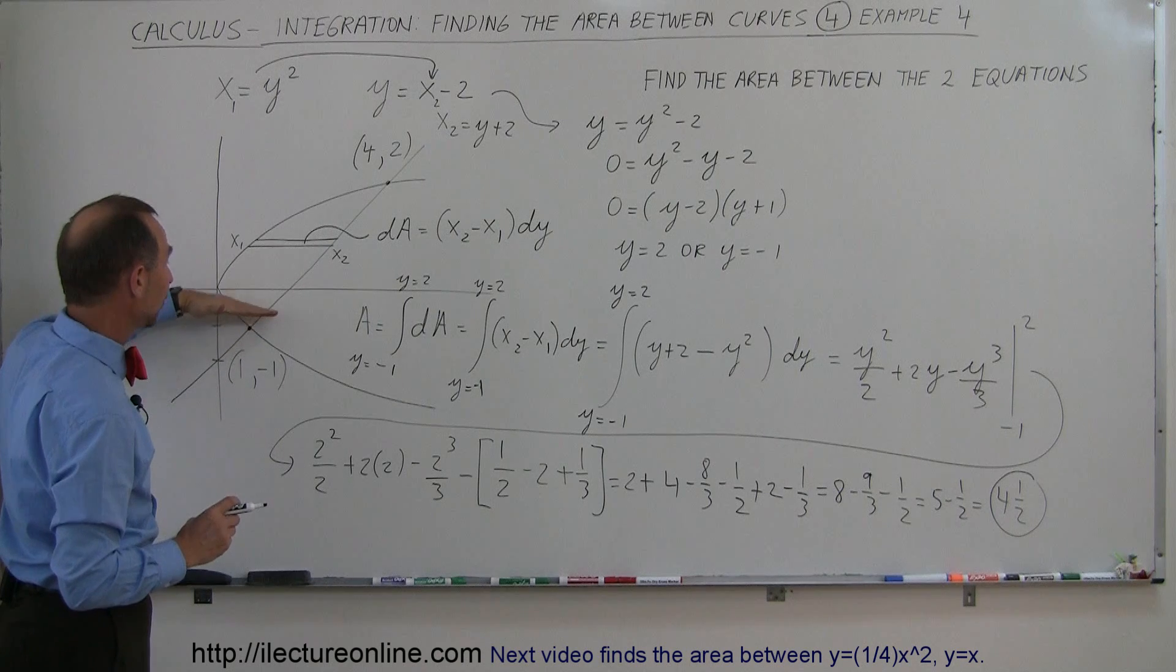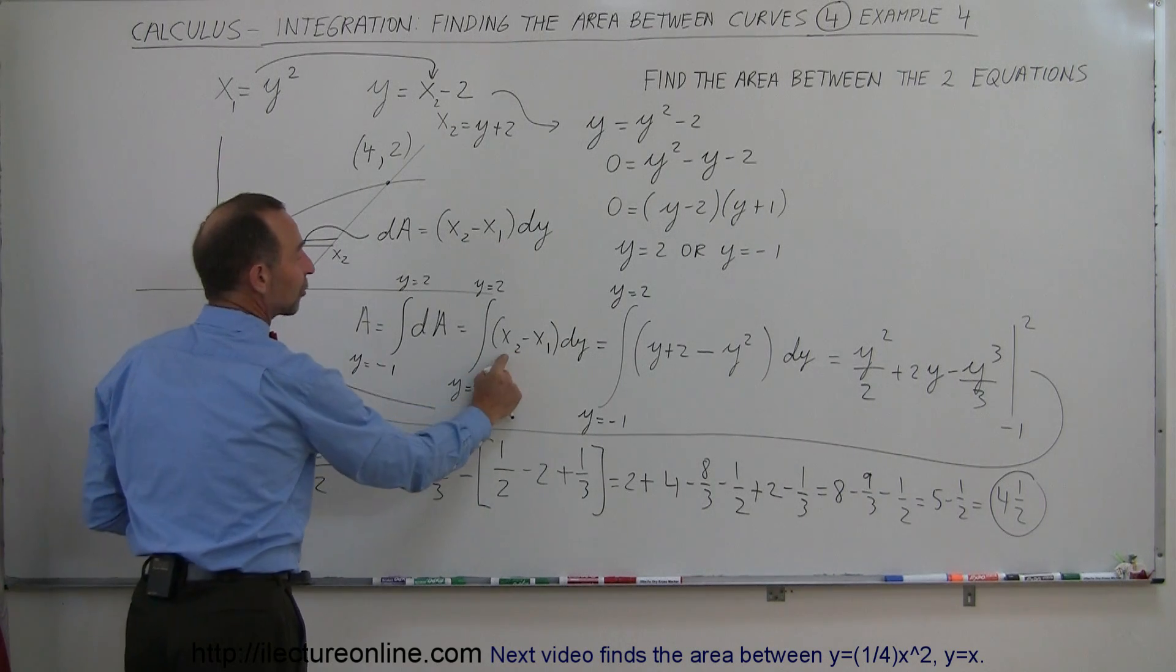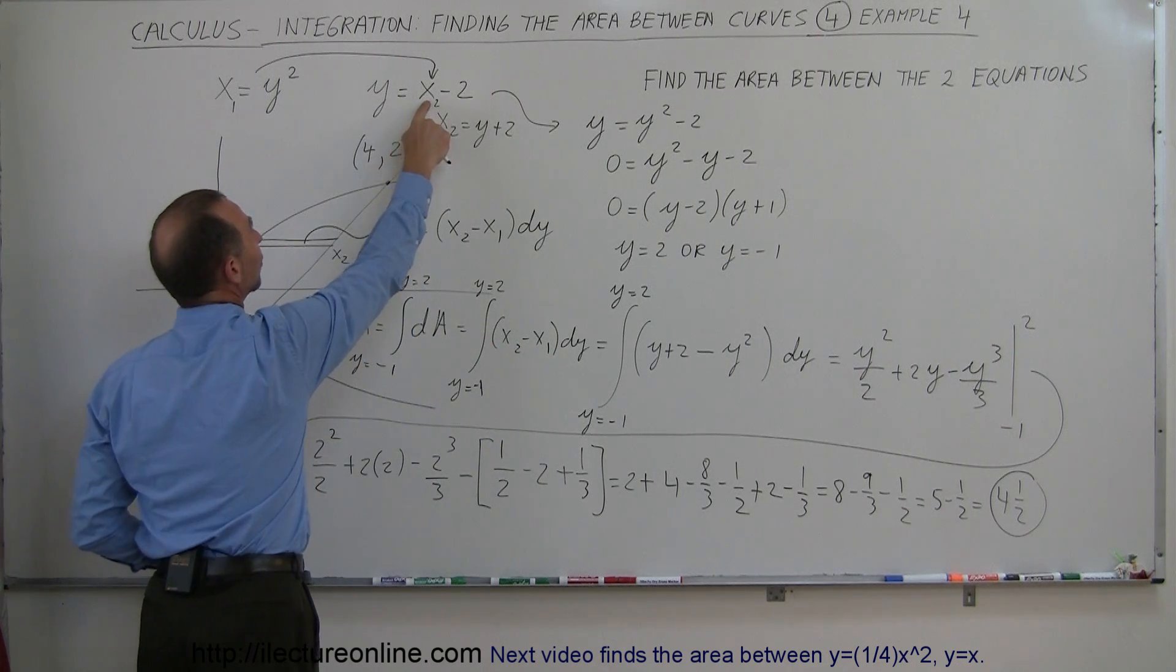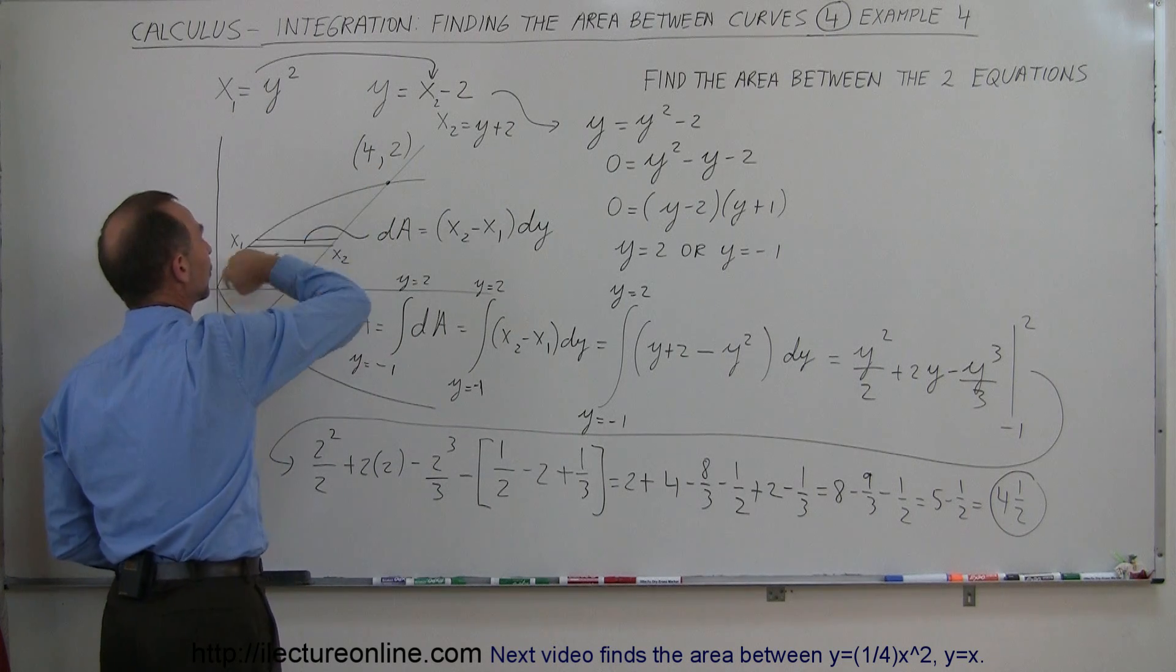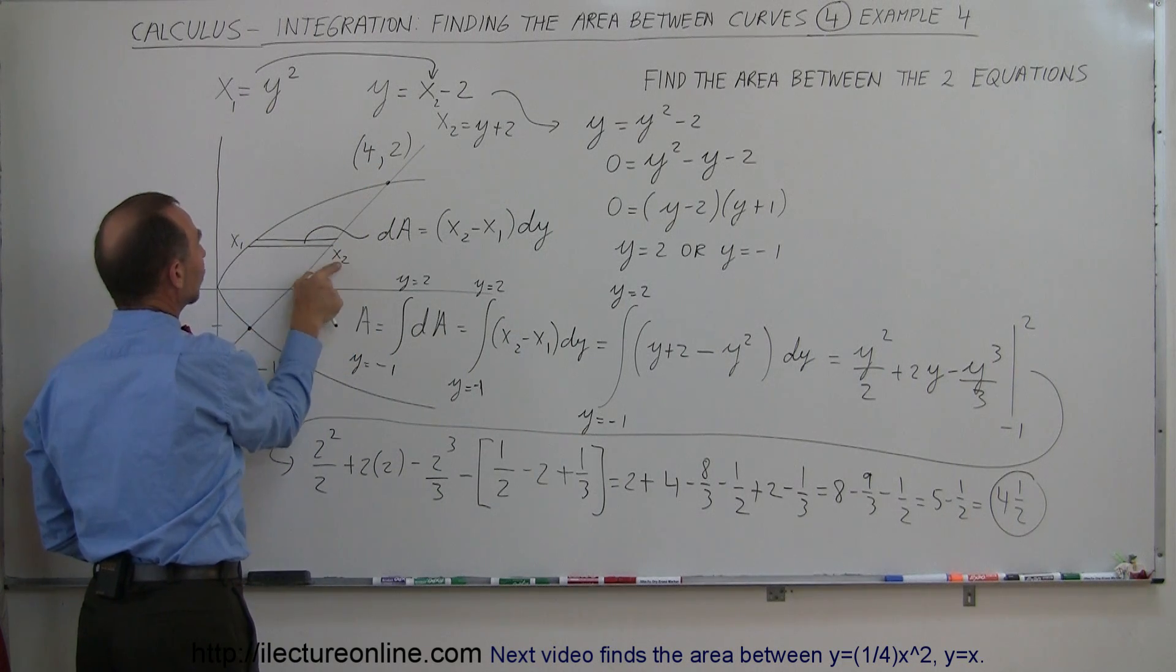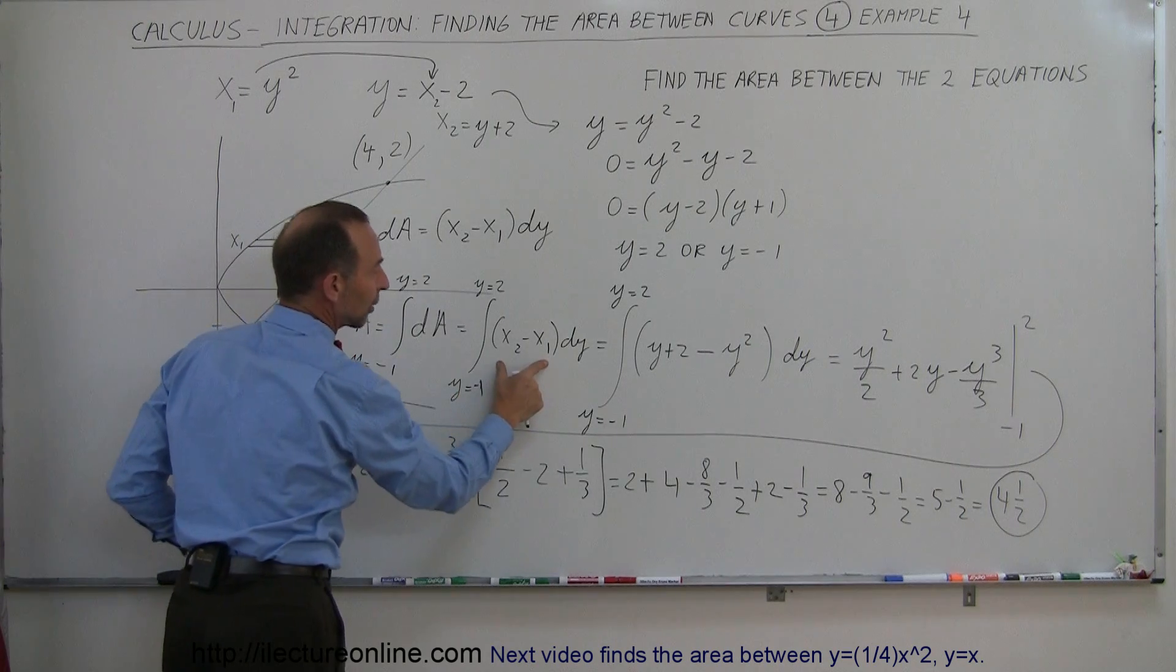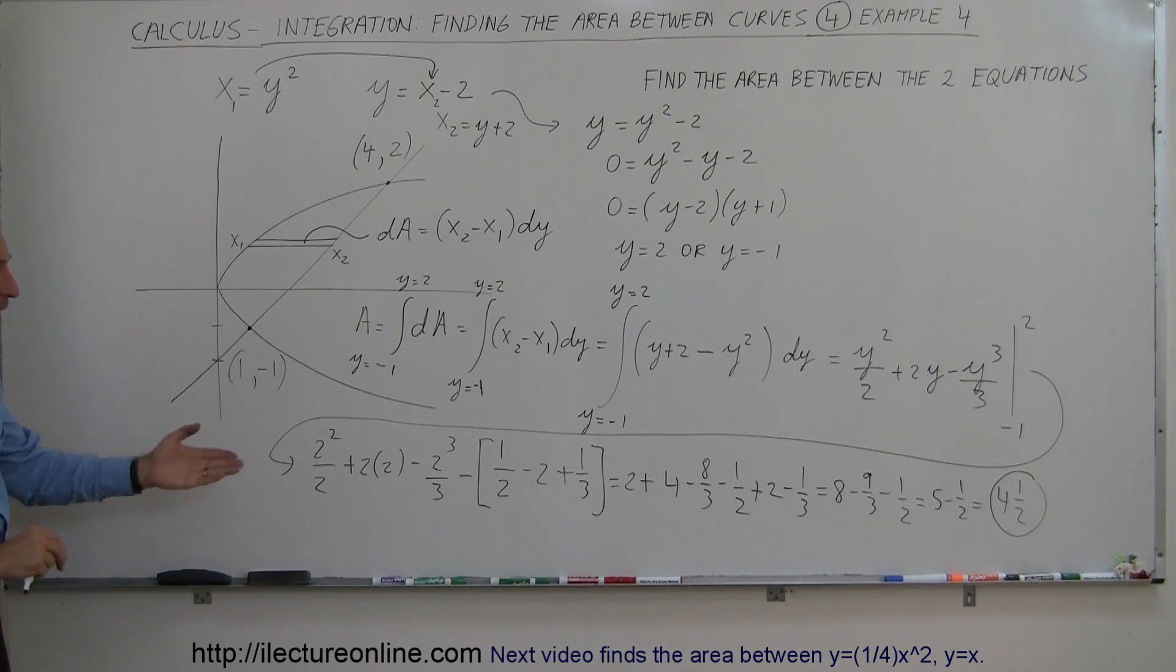And again, the best way to do it is to set up your area element sideways, so that the length of it is x2 minus x1. Define x2 as being part of this equation right there. x1 is the x of this equation right there, of the curve right there. So the length is x2 minus x1, and then replace x2 and x1 by what x2 and x1 are equal to in terms of y. And then you just integrate over the y limits, and you get your area. That's how we do that.